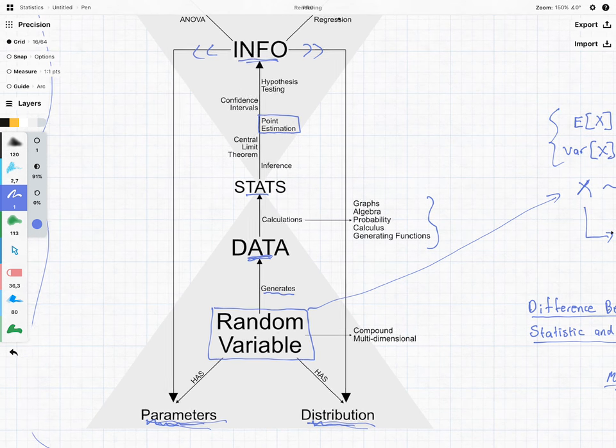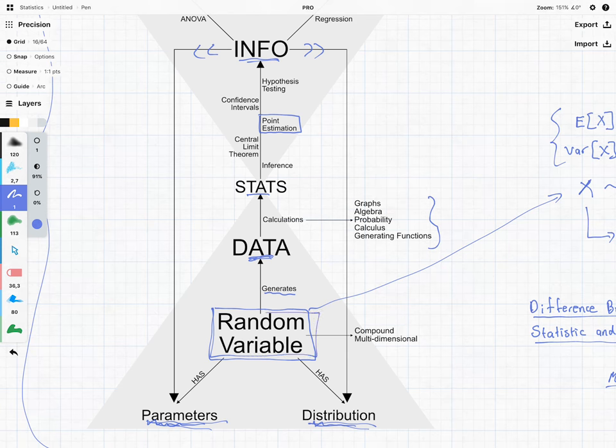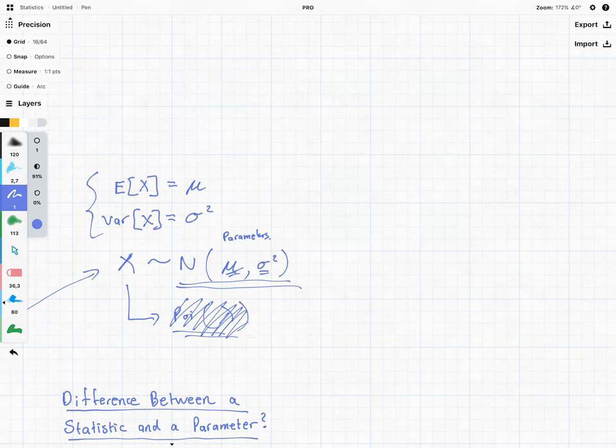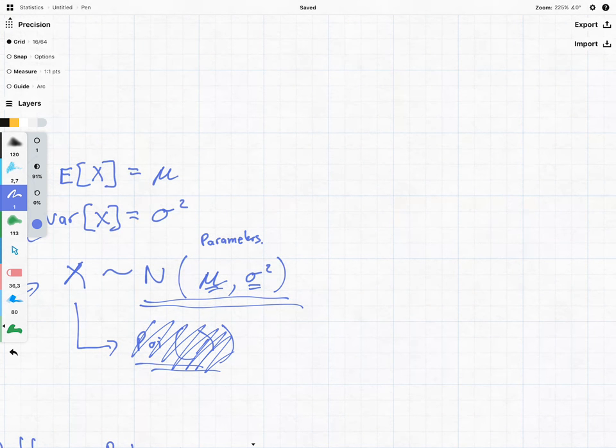Now, what can random variables do? Random variables can generate data. So let's say our random variable generates some data. And we normally denote the data by the lowercase x. So we have x1, we have x2, we have x3. These are data points of our random variable.